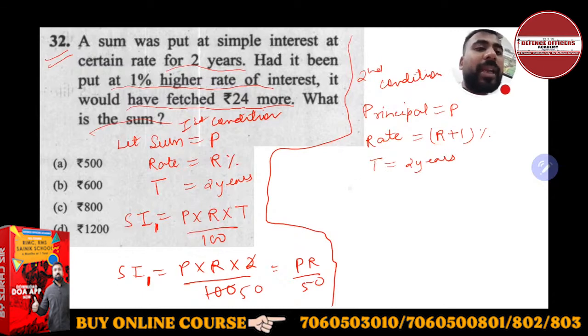It would have fetched 24 rupees more. So the interest will be 24 rupees more. So SI2 will be again P × (R + 1) × T, T is 2 / 100.